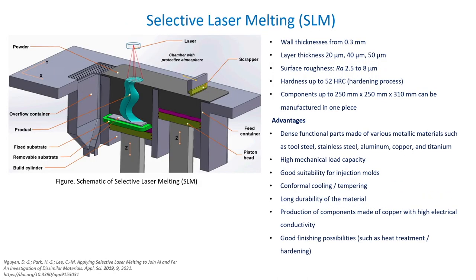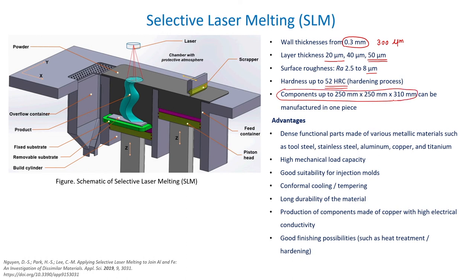Let us see some technical specifications of SLM. During the SLM process we can achieve a wall thickness of about 0.3 mm — that is about 300 micrometers. The layer thickness can be in the range of 20 to 50 microns. We can achieve a roughness between 2.5 and 8 microns, and the hardness of SLM-based products can be increased up to 52 HRC. The component sizes achievable are up to 250 mm × 250 mm × 310 mm.